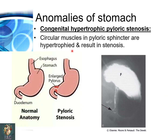Regarding anomalies of the stomach: congenital hypertrophic pyloric stenosis is the anomaly associated with stomach development. Anomalies of the stomach are very rare. This anomaly occurs because the circular muscles in the pyloric sphincter are hypertrophied, resulting in stenosis. Here you can see the pyloric part of the stomach where the circularly arranged muscles are hypertrophied and stenose the lumen of the pyloric part. This is the contrast radiographic picture of the stomach showing constriction in the pyloric part.